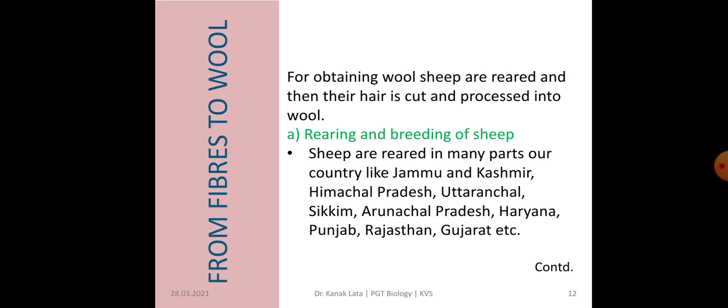The next topic is fiber to wool — how fibers are formed into wool. For obtaining wool, we first have to rear sheep. After rearing, the hair is cut and processed into wool. This includes two steps. The first step is rearing and breeding of sheep. In our country, sheep are reared in Jammu and Kashmir, Himachal Pradesh, Uttaranchal, Sikkim, Arunachal Pradesh, Haryana, Punjab, Rajasthan, and Gujarat.